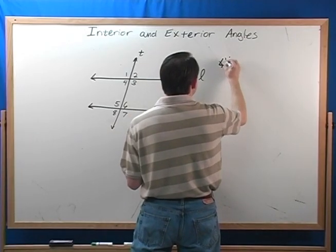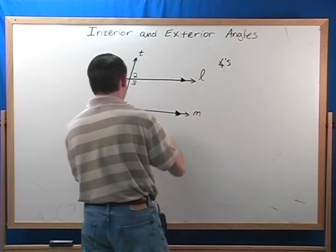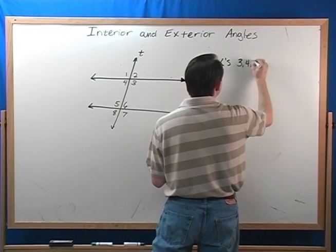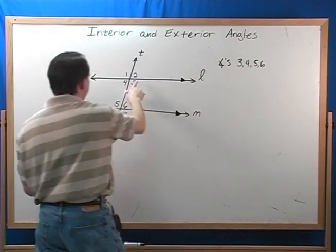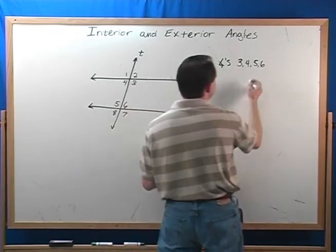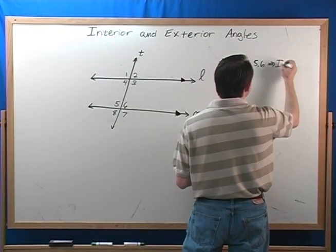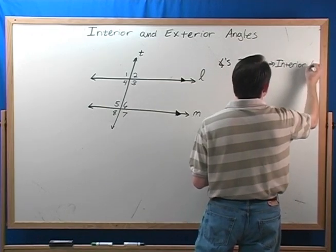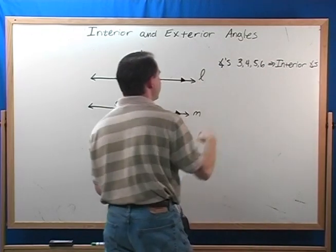Angles, and notice I'm using the abbreviation for angles. Three, four, five, and six. Angles three, four, five, and six, right? They are called interior angles. They're called interior angles.